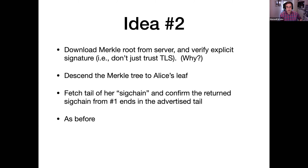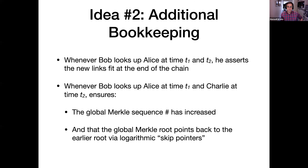This brings us to idea number two. Now when Bob looks up Alice, he downloads the Merkle root from the server and verifies an explicit signature on it. The Keybase client has a signing key for the server, and it makes sure the server has put an explicit signature on any root it gets back — not just trusting TLS. That way, if Bob gets a bad one, he could prove to someone he has the signature on the root and prove that Keybase actually lied. Bob traverses the Merkle tree down to Alice's leaf, fetches the tail of her sig chain, confirms the returned sig chain from the first link ends at the advertised tail, and replays everything as before.